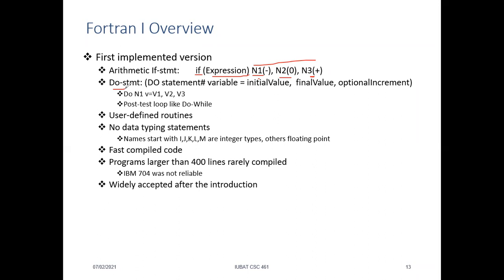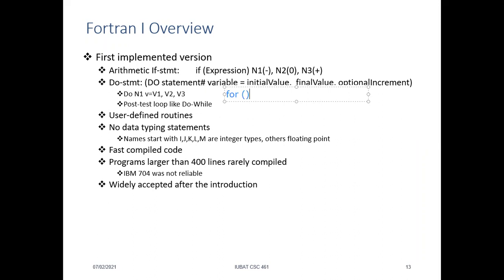Then we had the do statement. If you want to execute the same line of code multiple times, you could use this do statement, which is similar to the for loop. The first part is the variable — say 'i = 0' as the initial value — then the final value, say 10, and then the increment or decrement, which is optional. If you compare this for loop structure with the do statement structure, you'll see that both are actually the same. This is where FORTRAN I introduced the concept of a loop.